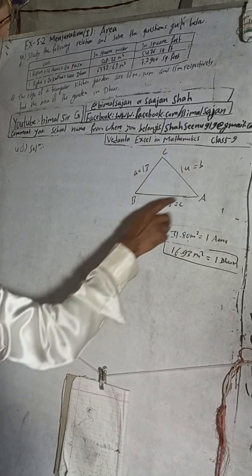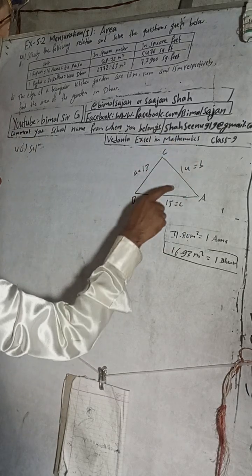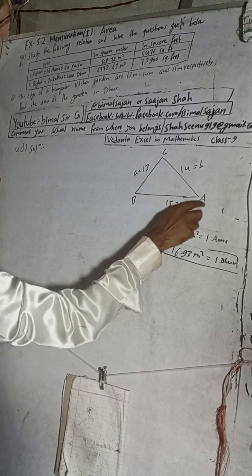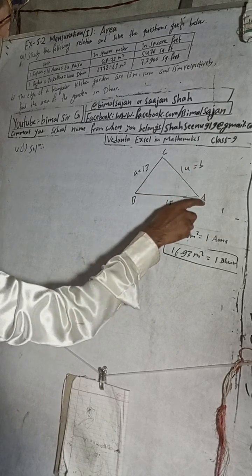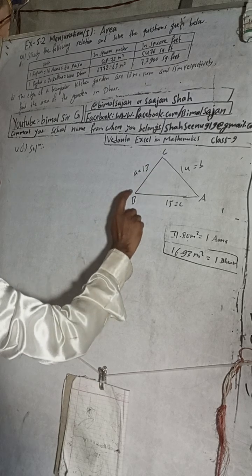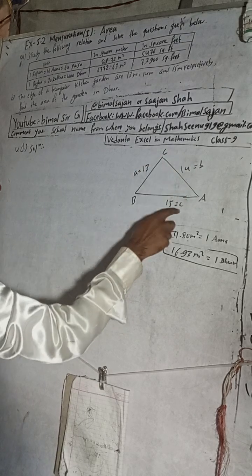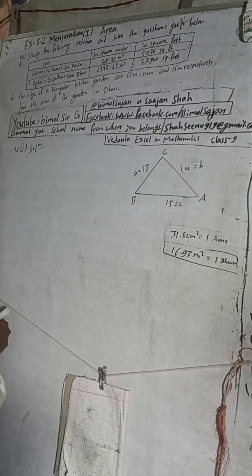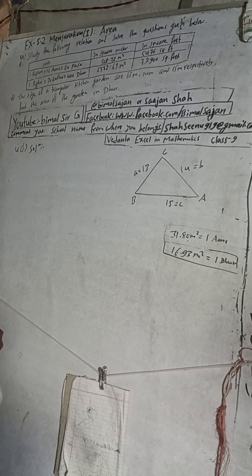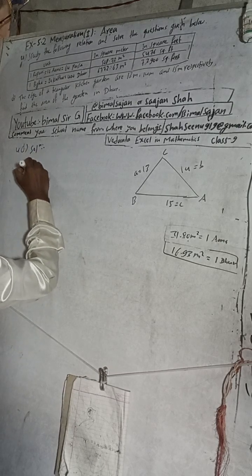Suppose this is a triangle ABC. This side opposite to capital A is small a, opposite to capital B is small b, and opposite to capital C is small c. So we can now write the edges of our kitchen garden as sides.